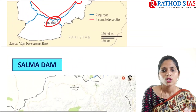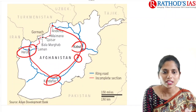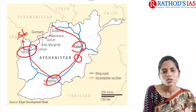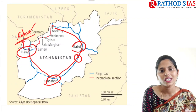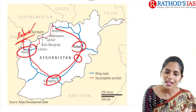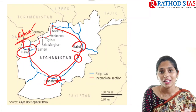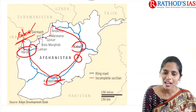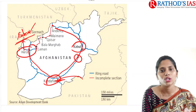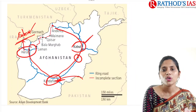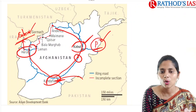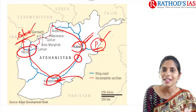Next is the Salma Dam. In the Herat region we have the Salma Dam, which is also called the India-Afghanistan Friendship Dam. Kandahar is important from India's point of view because one aeroplane was hijacked and taken to Kandahar. And in Kabul we have an Indian development project — the Parliament of Afghanistan, located in Kabul and developed by India.